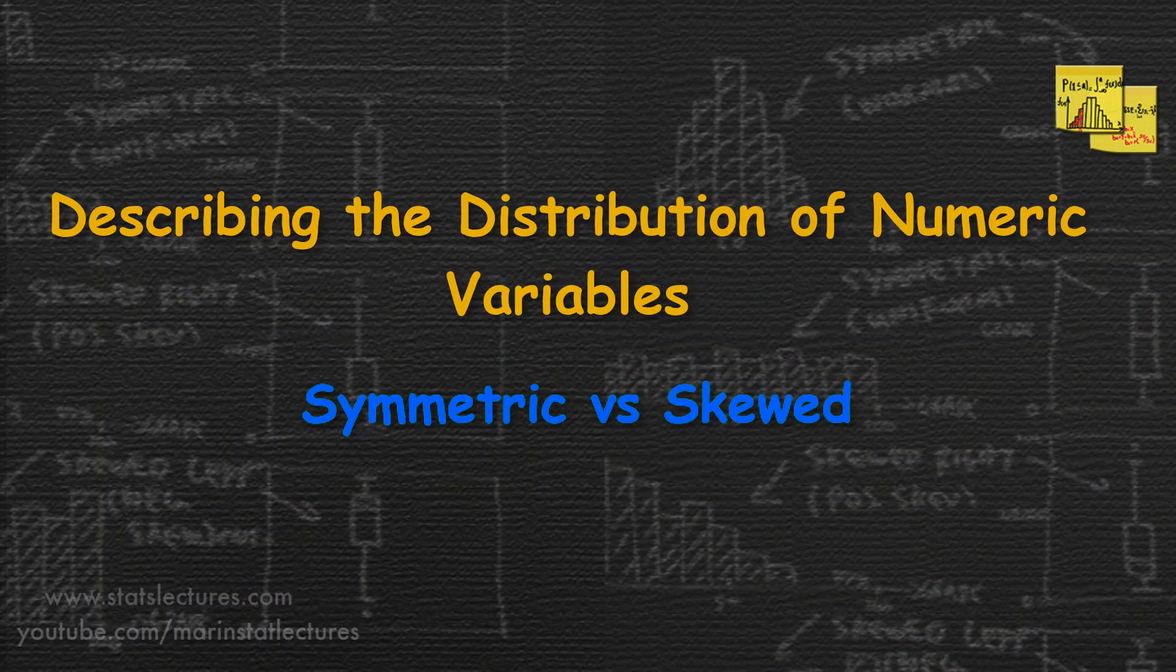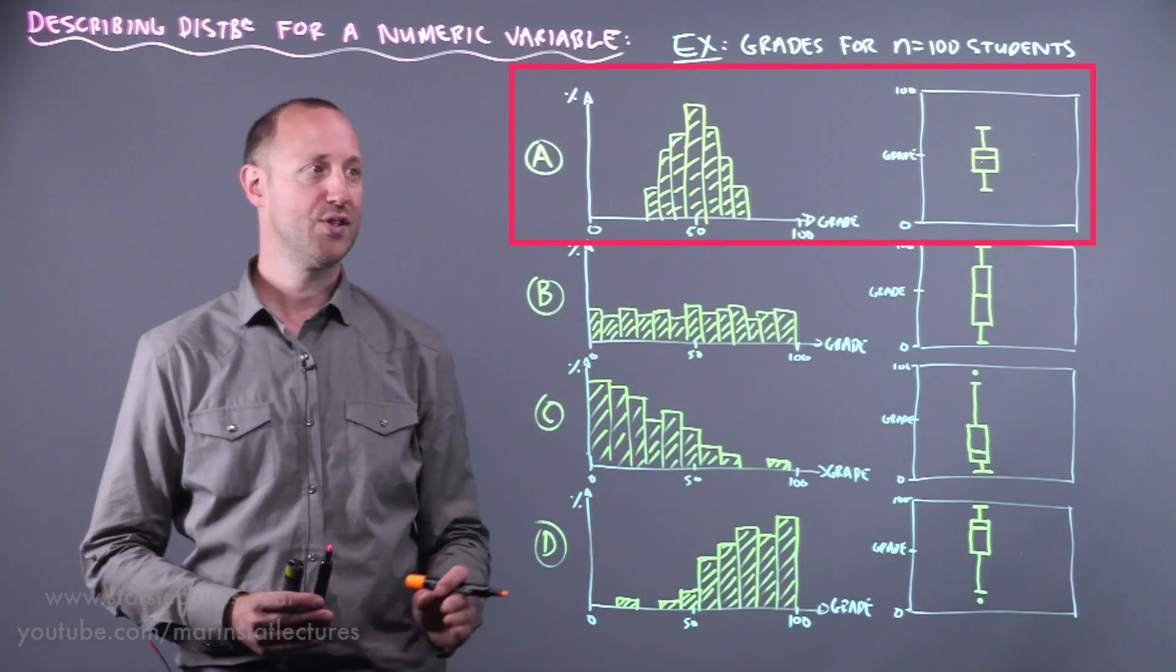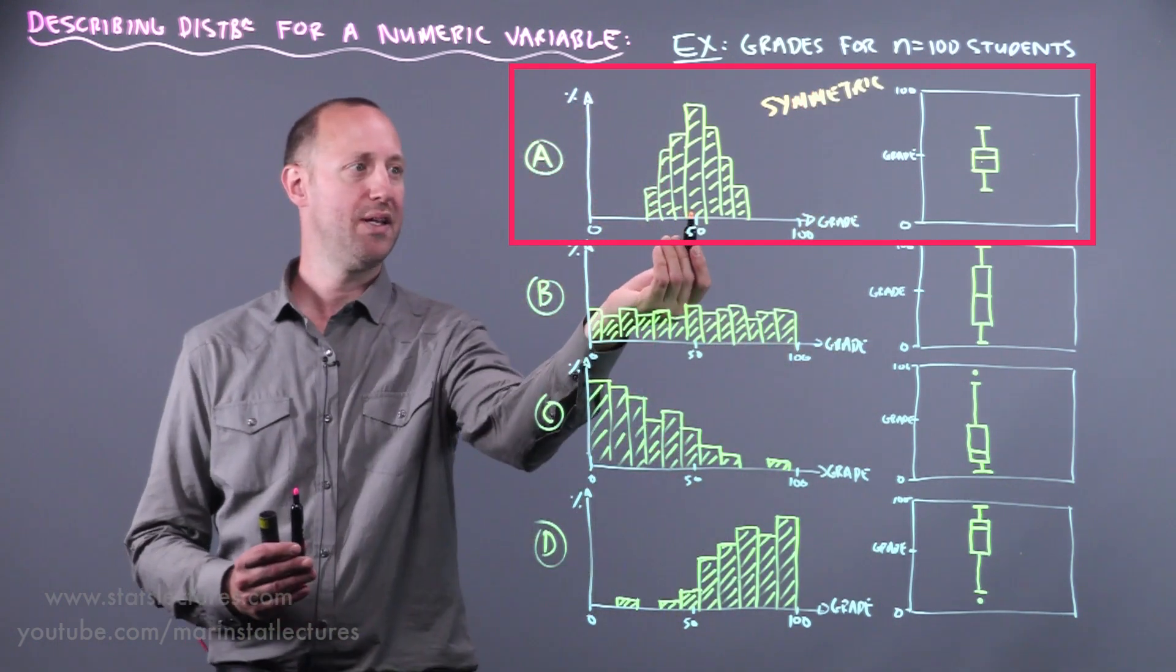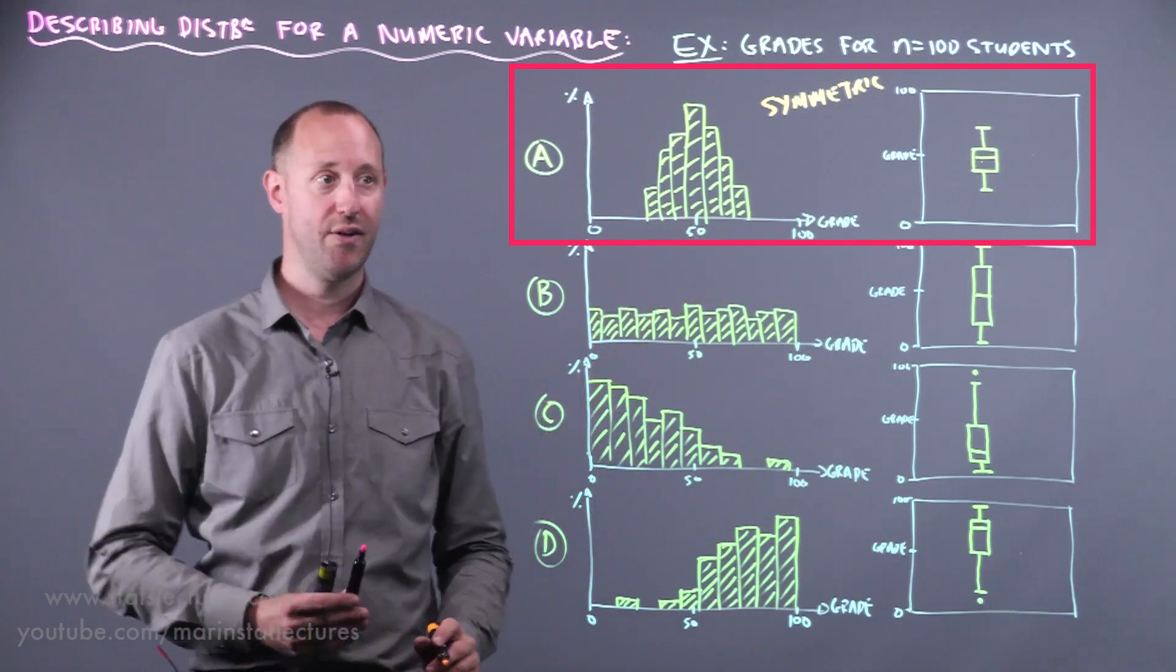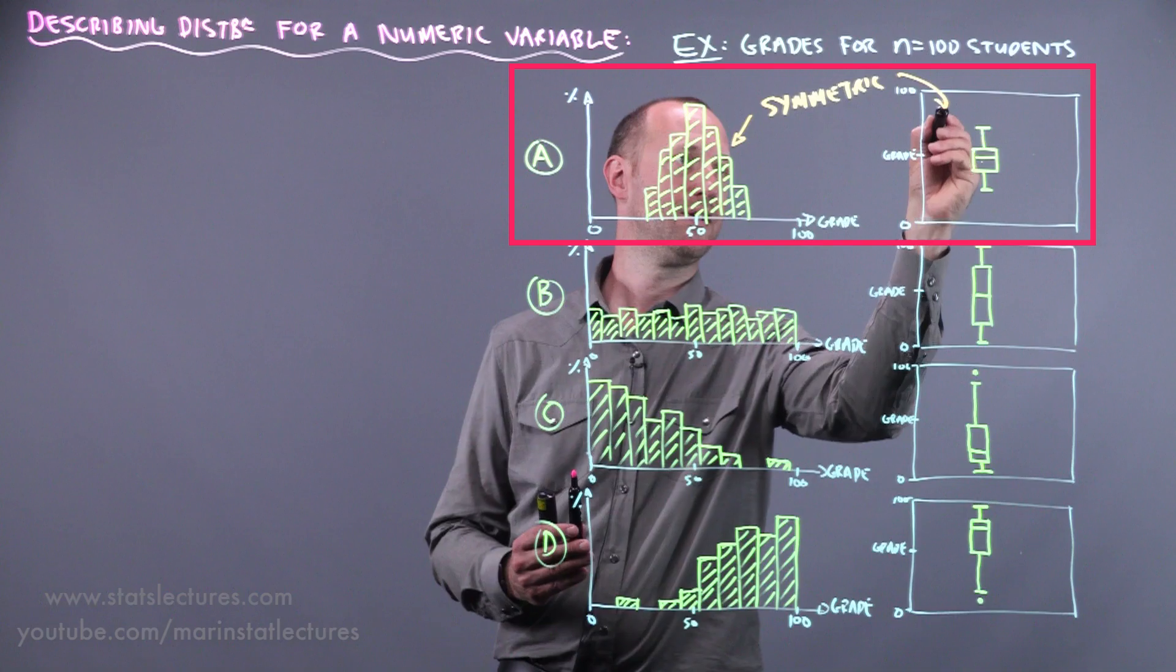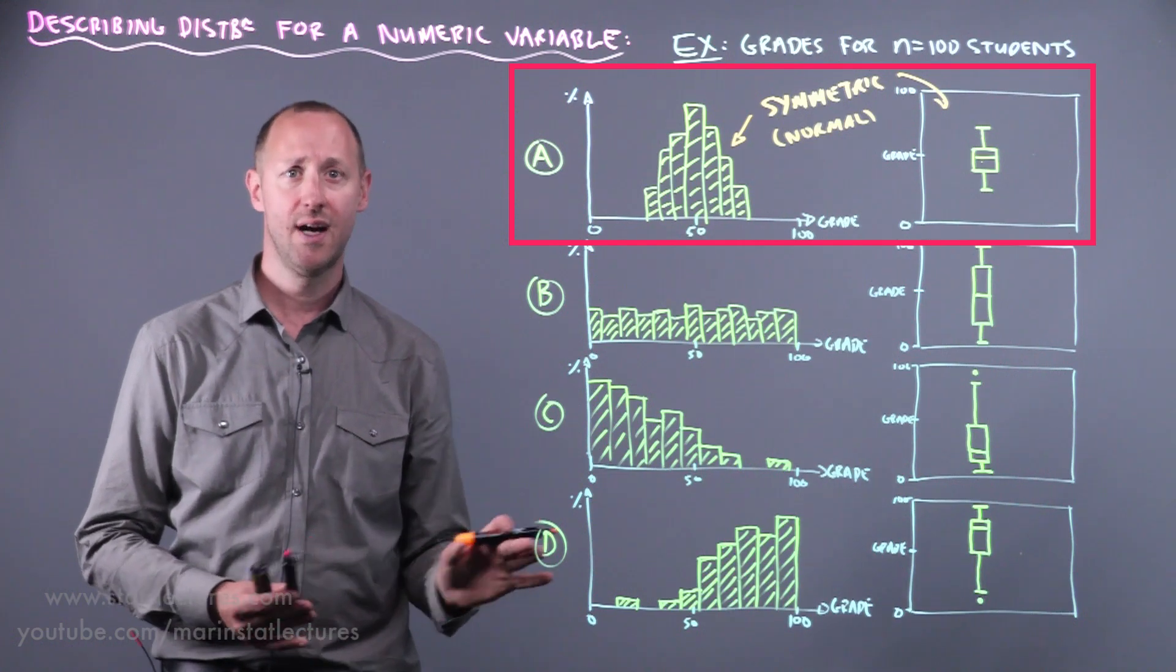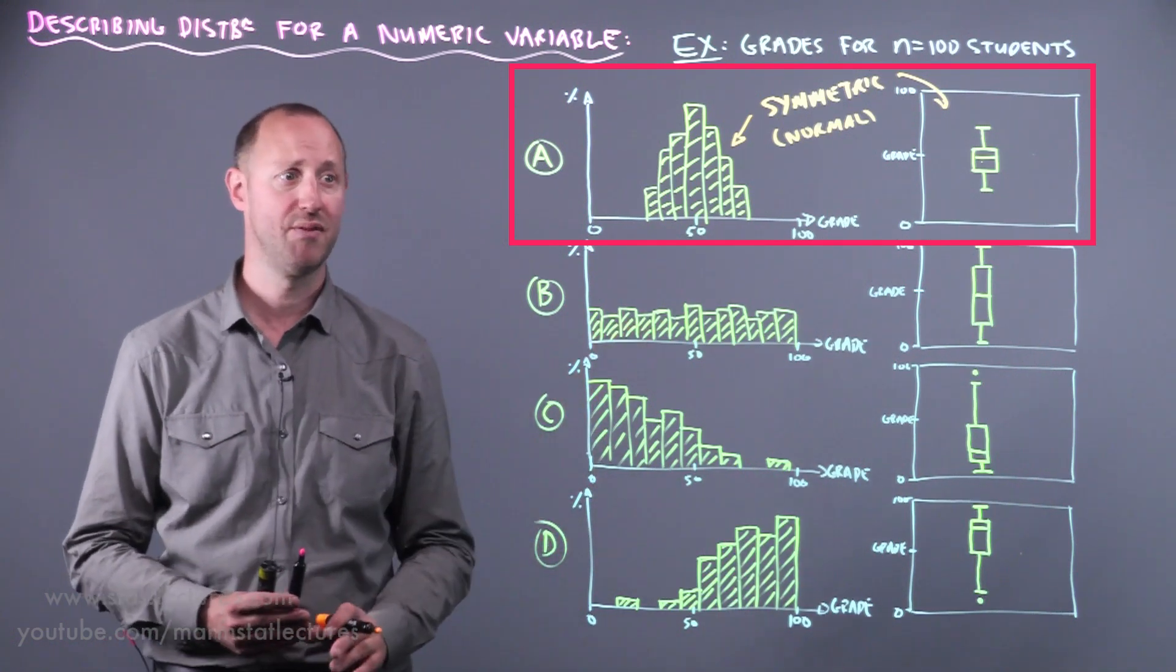So what we want to think about is the distribution symmetric or skewed. So looking at this first one here it looks like a nice symmetric distribution, and by that we mean if we pick a center point in there it's roughly evenly or symmetrically distributed around that center. And a word we're going to attach to this later on is it looks sort of normal, like a bell curve or a normal distribution. That's a topic that's coming up pretty soon.